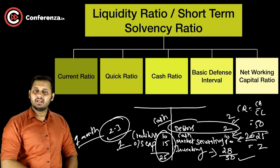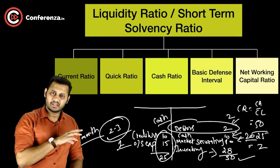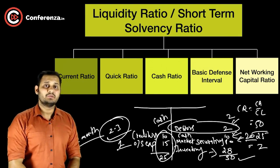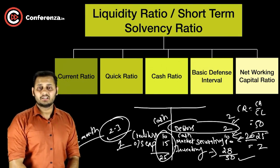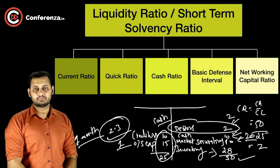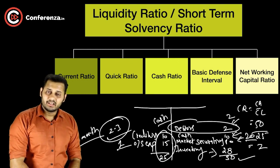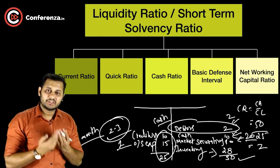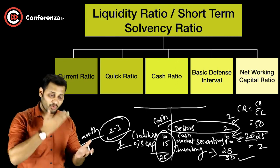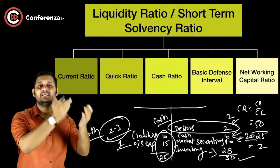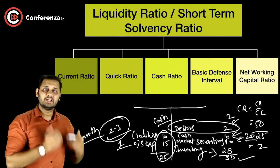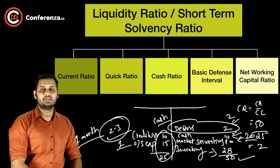Now comes the inventory part. Whatever inventory is sitting in your stock — can you sell all of it within 2-3 months? It's not possible. It takes up to a year to sell inventory; inventory does not sell that easily. So the bottom line is: within 3 months, you need to pay 25 rupees, but you simply don't have that much cash available — enough cash is just not being generated within 3 months.